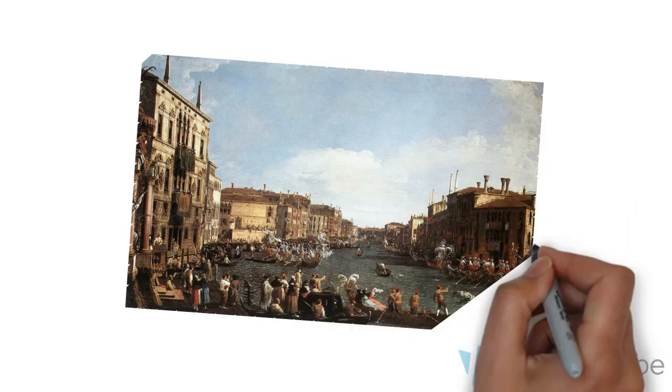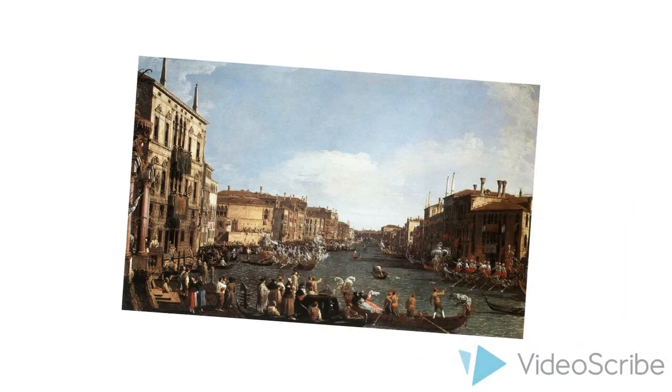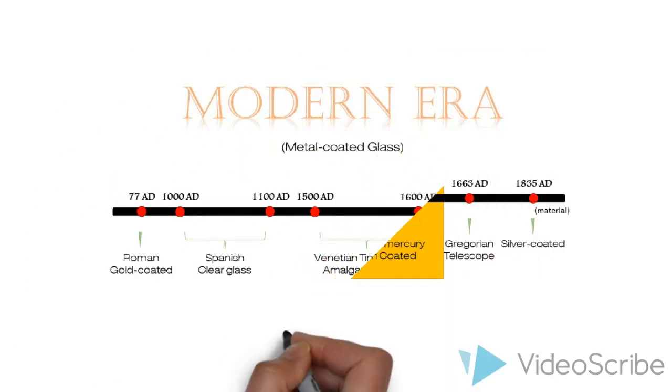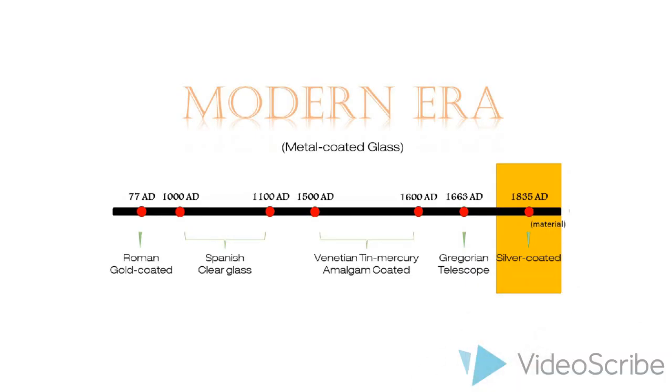Nonetheless, glass mirrors from this period were still an extremely expensive luxury. The invention of the silvered glass mirror is credited to German chemist Justus von Liebig in 1835.